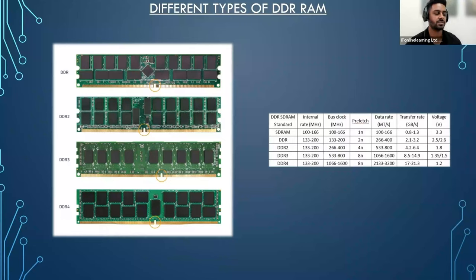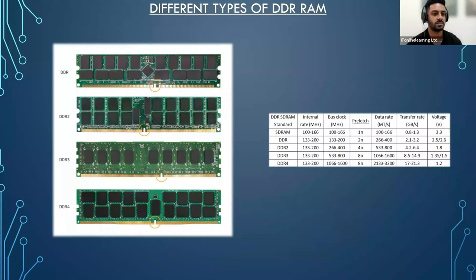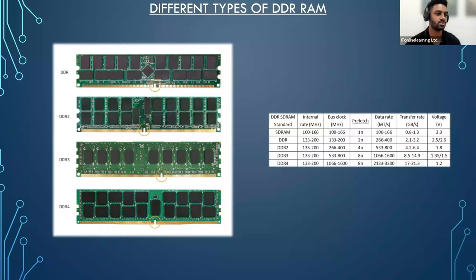Let's talk about the different types of DDR RAM. When you purchase a desktop or laptop, you would have noticed a label stating it has 8GB of DDR4 RAM or 16GB of DDR3 RAM. The RAM in your computer operates using double data rates — that is what DDR stands for. It means they are capable of two reads and two write tasks per clock cycle.